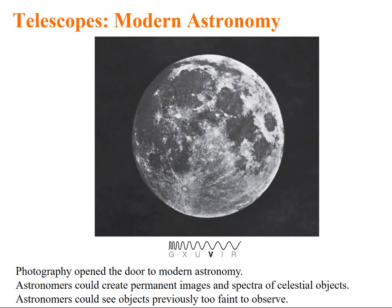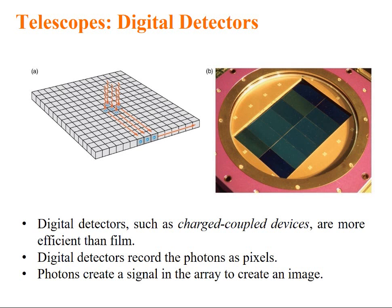Modern astronomy. Photography opened the door to modern astronomy. Astronomers could create permanent images and spectra of celestial objects. Astronomers could see objects previously too faint to observe. By your simple mobile camera, you can take fabulous pictures of moon and analyze it. What are the features in the digital detectors which is available with us right now? Digital detectors are called charge-coupled device. They are more efficient than film. Digital recorders record photons as pixels. Photon creates a signal in the array to create an image.